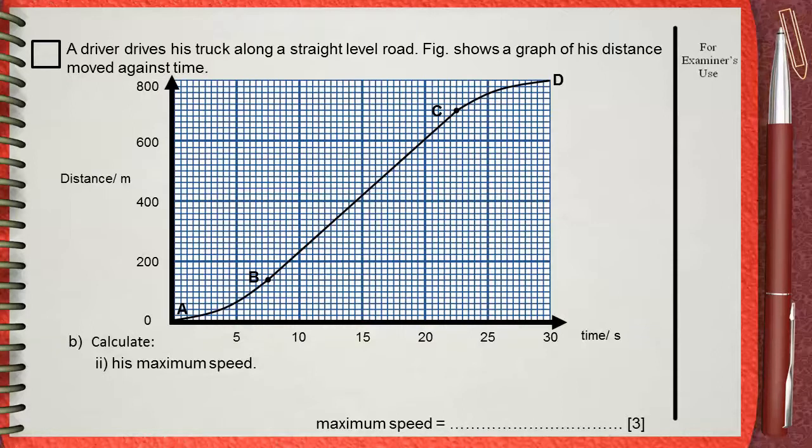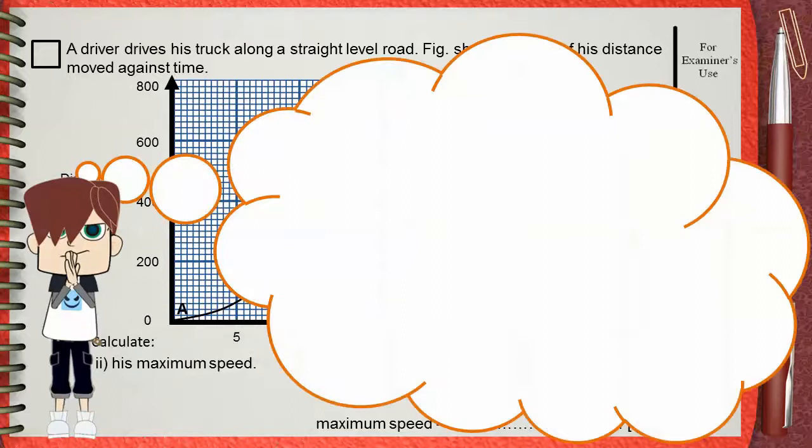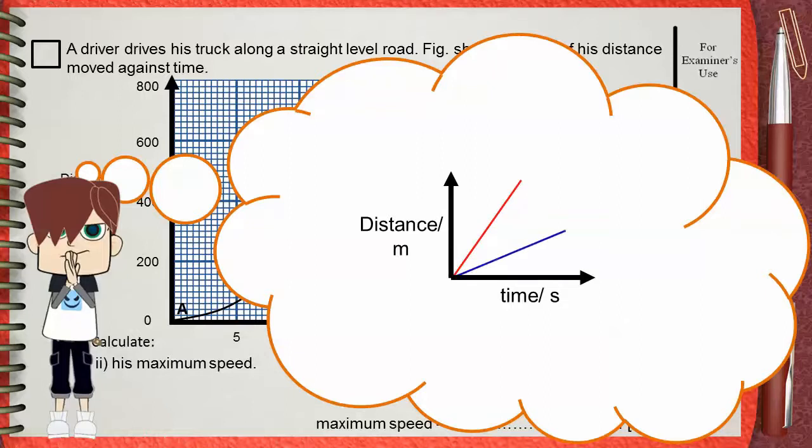If you remember the distance-time graph, the slope of the graph gives the speed. This means that if you have two graphs with different slopes, the steeper one will be the faster because it has the greater slope. Of course, the less steep one will be the slower because it has the smaller slope and hence the smaller speed.